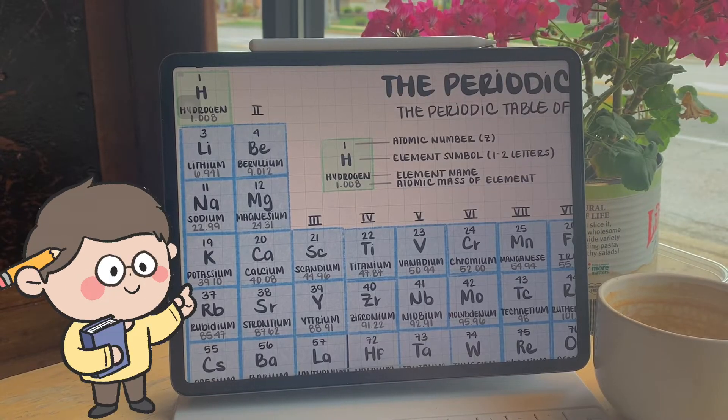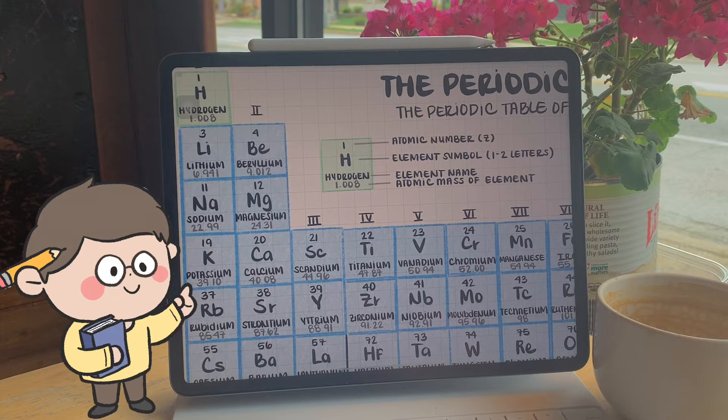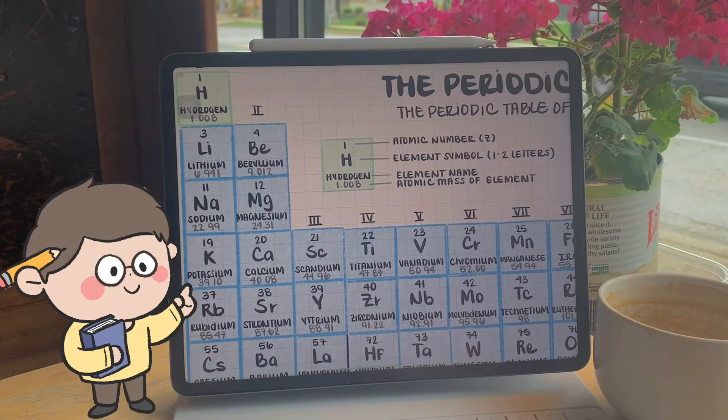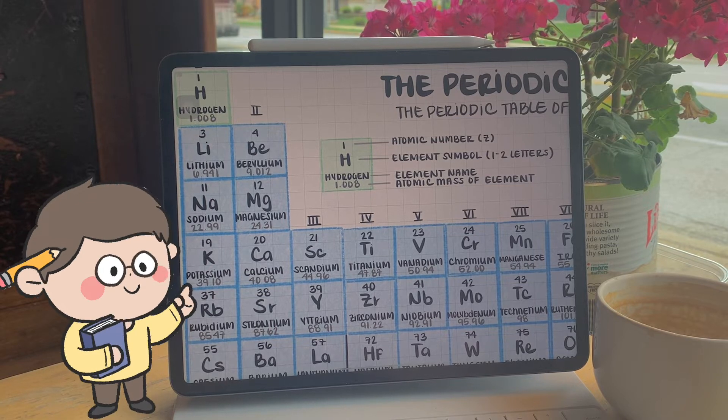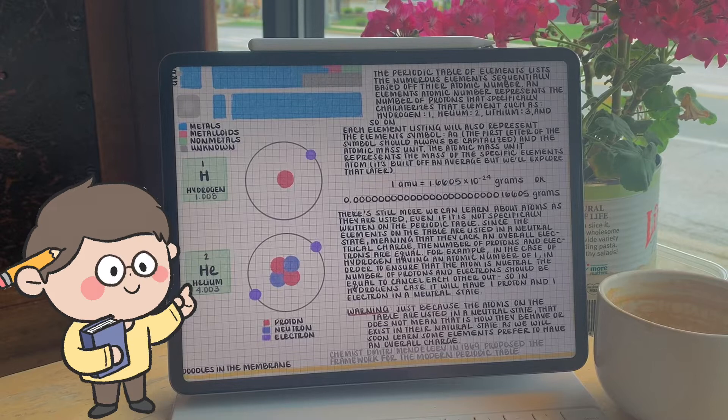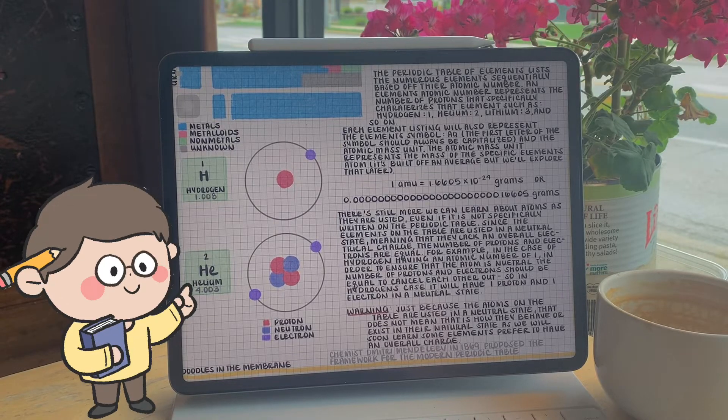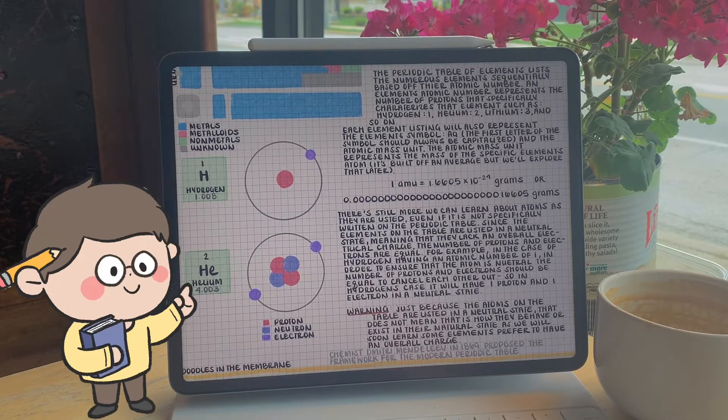There's still so much more we can learn about atoms, even if it's not specifically listed on the periodic table. Since the elements on the table are listed in what we call a neutral state, meaning that the atom itself lacks an overall net electrical charge, the number of protons and electrons must be equal.